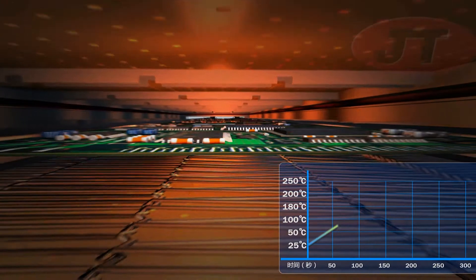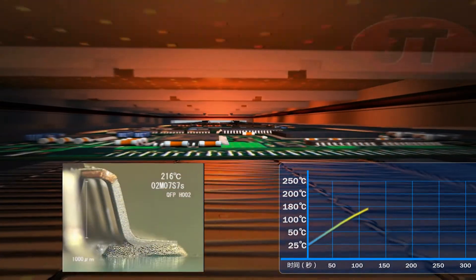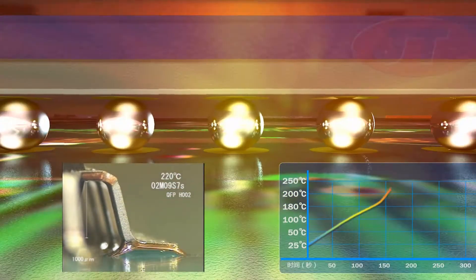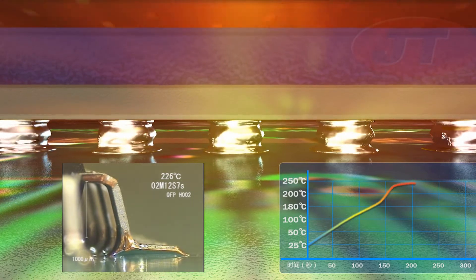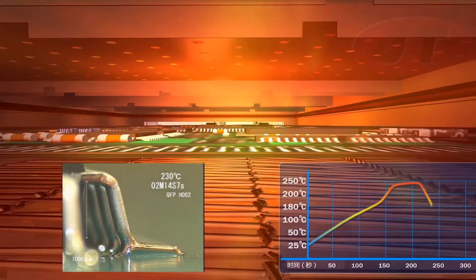When soldering complex PCBs with microchips, large ICs, and even BGAs all located on the same assembly, it's particularly important to achieve the lowest delta temperature.